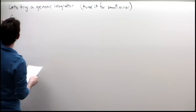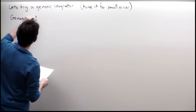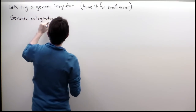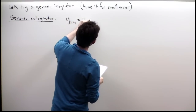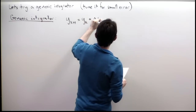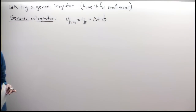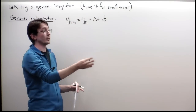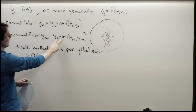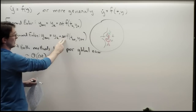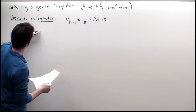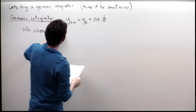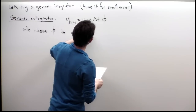My generic integration is going to look like y_{k+1} equals y_k plus delta-t times phi. This actually has very much the same form as forward Euler and backward Euler — they both have the form y_k plus delta-t times some function phi; they just have different functions phi. We are going to choose phi to reduce error.